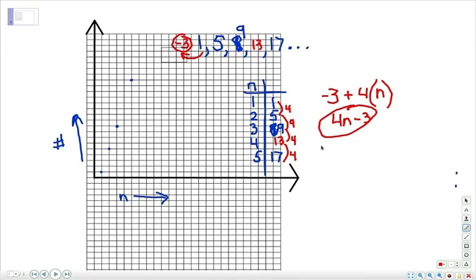What's the tenth term? Let's substitute the 10 in there in place of n. So 4 times 10, which of course is 40. Take away 3, 37.